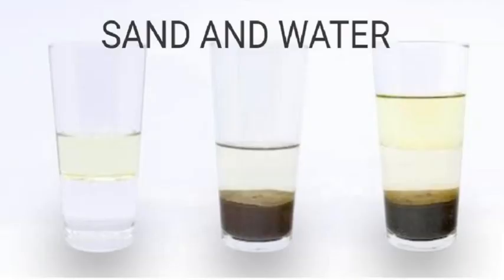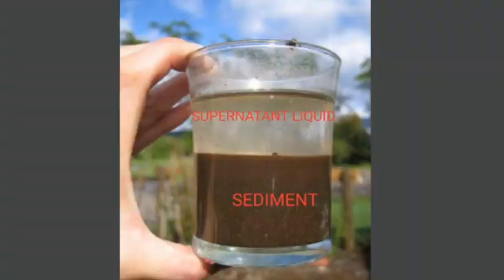Take the example of sand and water. We know that sand is insoluble in water. The mixture is allowed to stand undisturbed until the insoluble heavy solid particles settle down and form two different layers. The sand settled at the bottom is referred to as sediments and the clear water above is called supernatant liquid.